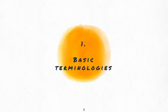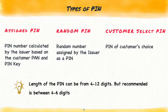In the first section let us look at some basic terminologies. As we all know, a PIN number is a numeric value that is assigned to every card to be used in transactions. There are three types of PINs. The first one is an assigned PIN — a PIN number assigned by the issuer based on certain calculation on the PAN number and the PIN key. The second type is a random PIN, which is not based on the PAN number; it is just a random number that is generated.